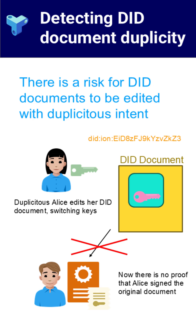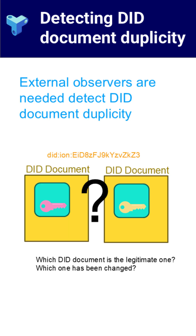Technically, the document itself would still be valid, with all the required digital signatures in place, making the change difficult to detect by looking at the DID document alone. That's why it's important to observe DID document changes from the outside. There are a few ways to do this.